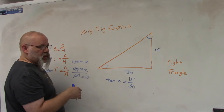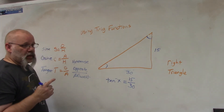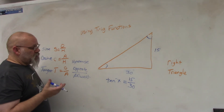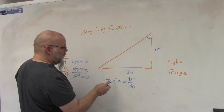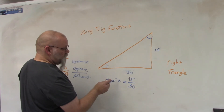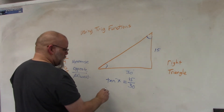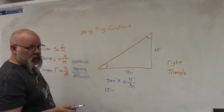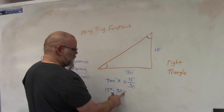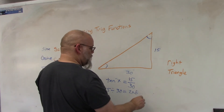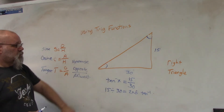If I'm looking for the angle, I don't use the tangent button — right above it there's tangent minus 1, which is the inverse. So in the calculator — I use the TI-30XA — I would take 15 divided by 30, hit equals, then hit second function tan⁻¹, and it would give me that angle.